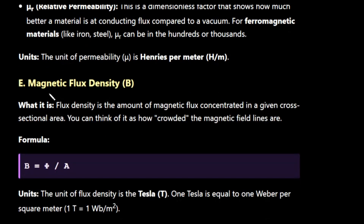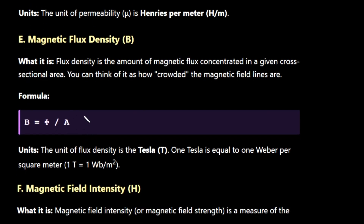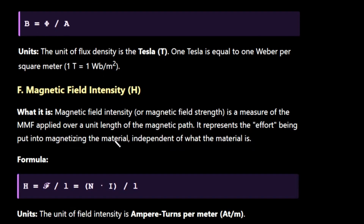Next is magnetic flux density, represented by B. Flux density is the amount of magnetic flux concentrated in a given cross-sectional area — you can think of it as how crowded the magnetic field lines are. The formula is B = phi / A. The unit for magnetic flux density is Tesla, where 1 Tesla equals 1 Weber per square meter. Magnetic flux density can be represented using either Tesla or Weber per square meter.